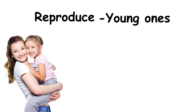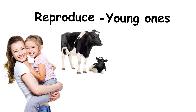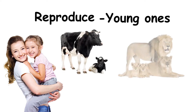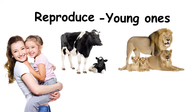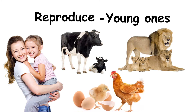For example, a woman gives birth to a baby. A cow gives birth to a calf. A lion gives birth to a cub. Birds reproduce by laying eggs.